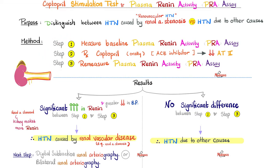Step three: re-measure the plasma renin. If there is a significant increase in renin between step 1 and step 3 — renin is much higher in step 3 — this proves the hypertension is caused by renal vascular disease, i.e., renal artery stenosis, which means renovascular hypertension.